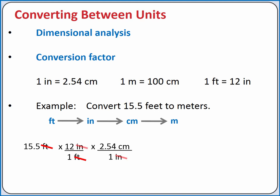Now inches cancel and we're left with centimeters. To cancel out centimeters, we can multiply by 1 meter divided by 100 centimeters and we'll be left with meters, which is the unit we want.